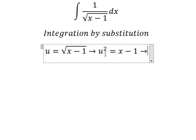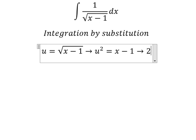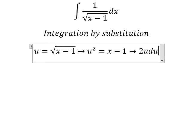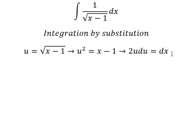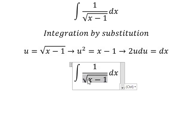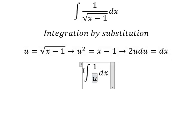Next, we differentiate both sides so we have 2u du equals to dx. The square root we change for u, dx we change for this one.